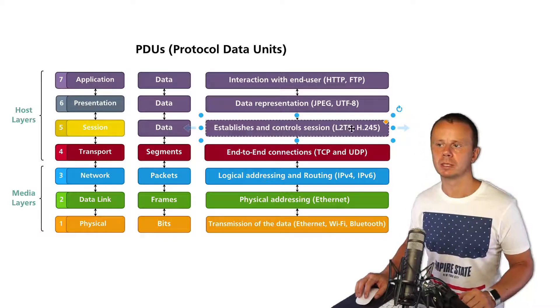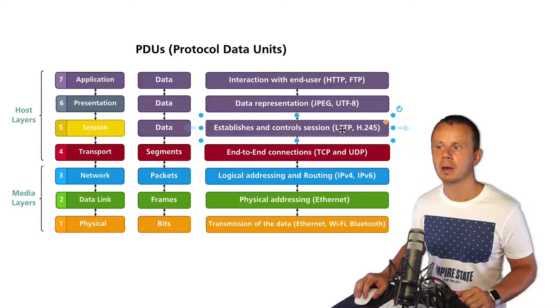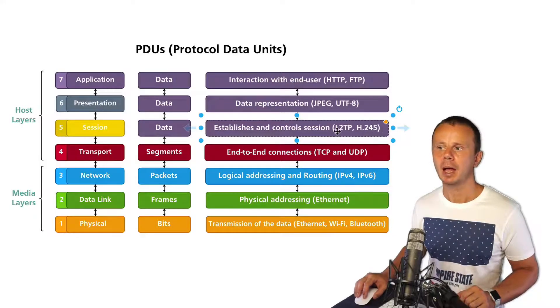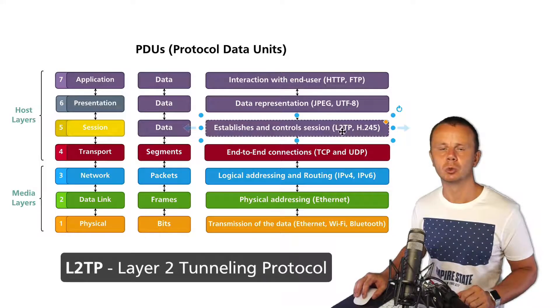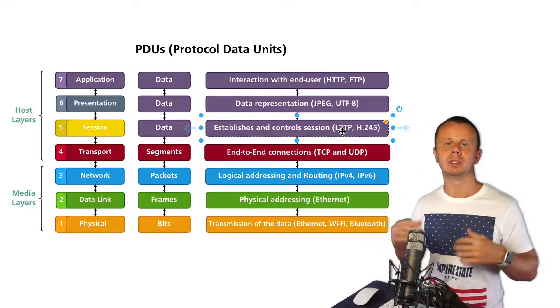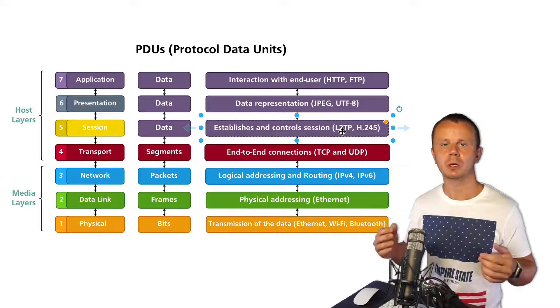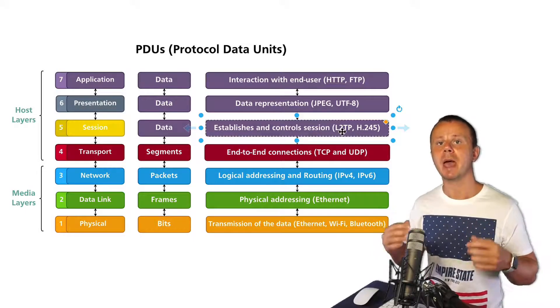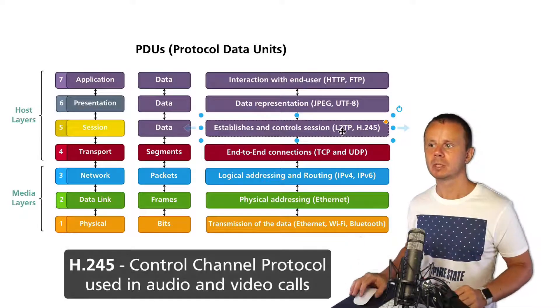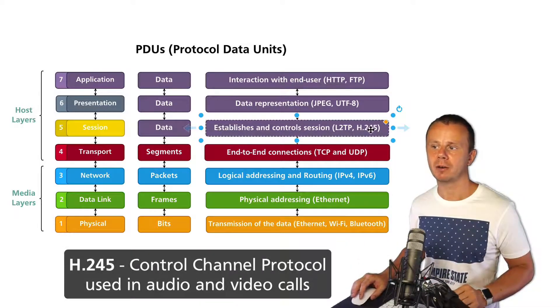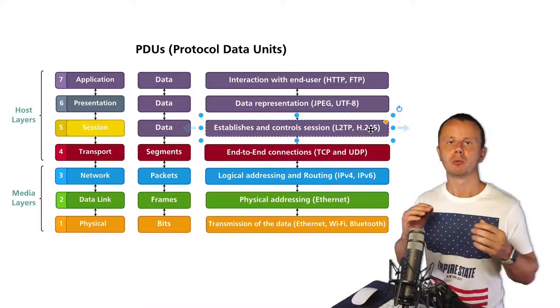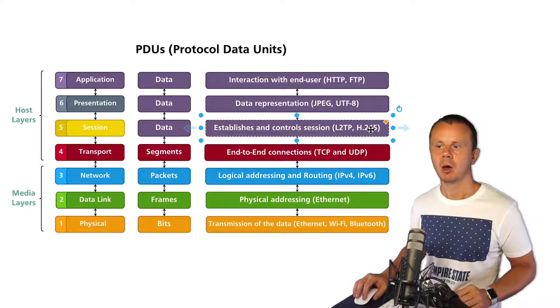Examples of protocols that are used on the session layer are L2TP and H.245. L2TP stands for Layer 2 Tunneling Protocol, and using such a protocol you could establish a tunnel between different endpoints in a computer network and send some Layer 2 frames over this connection. Using H.245 protocol, we could control phone calls established over a computer network.